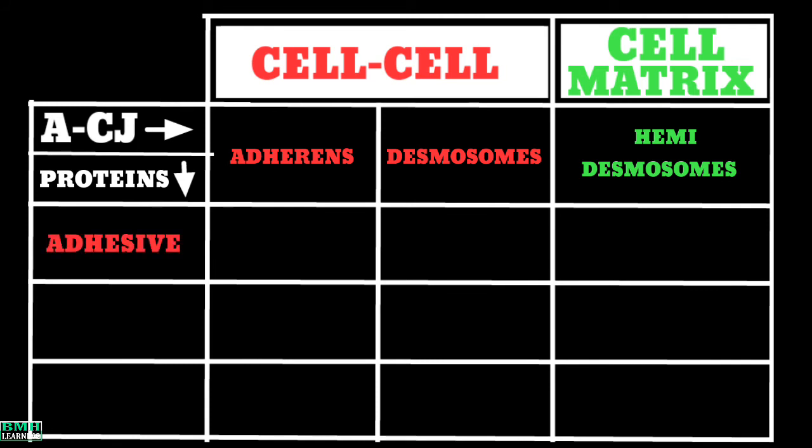These are adhesive proteins, adaptor proteins, and cytoskeleton proteins. Now let's know which protein is associated with the specific anchoring junction.